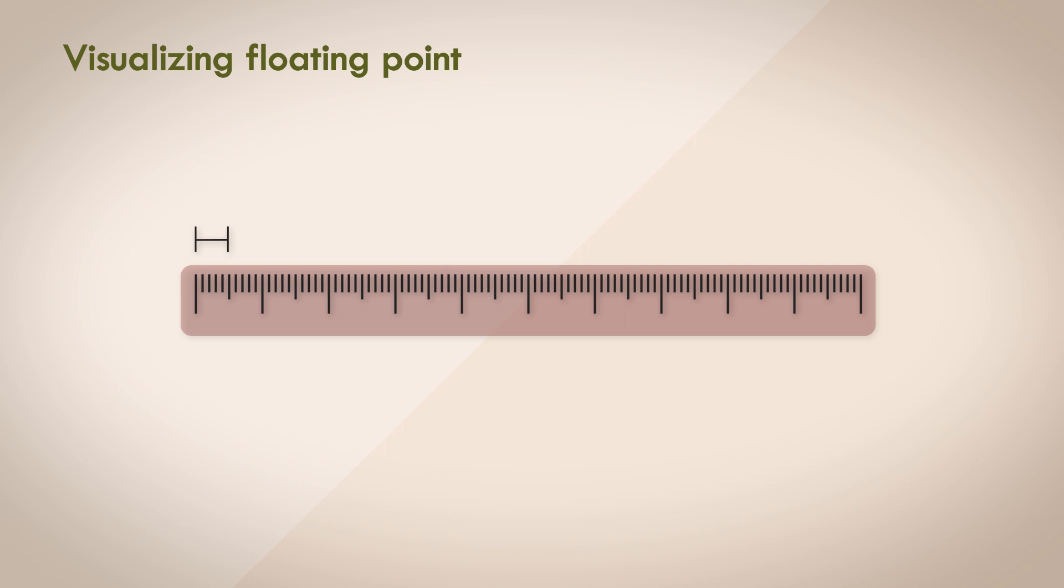If you want to measure two distances spaced more than 1 meter away, then you can't measure it. You need a bigger ruler. This is analogous to fixed point representation. The ruler is fixed, so is the precision. The representable range is limited to what the container, or the ruler in this case, offers.